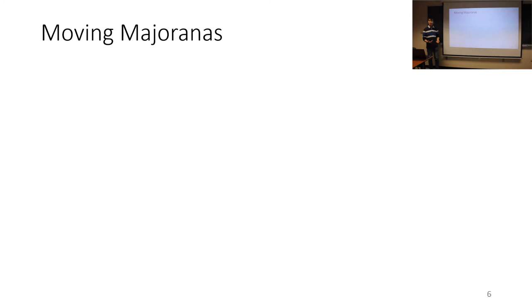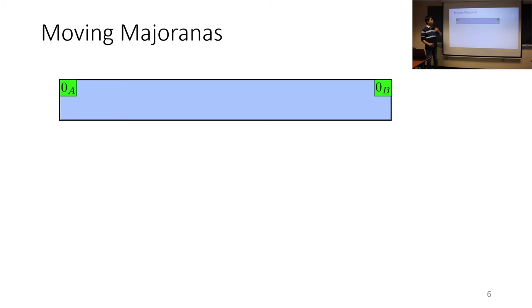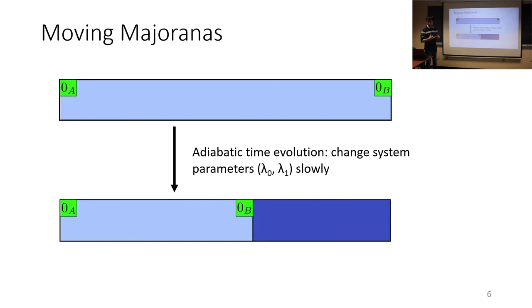So before we talk about the braiding protocol, let's talk about the ingredients that go into it first. So we want to have a way to move the Majoranas across the Kitaev chain. So as an example, let's just have the Kitaev chain with two edge Majoranas, 0 Majoranas.